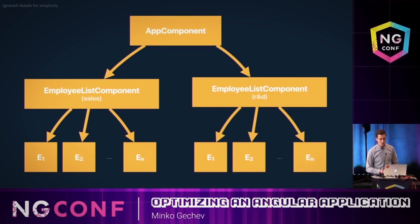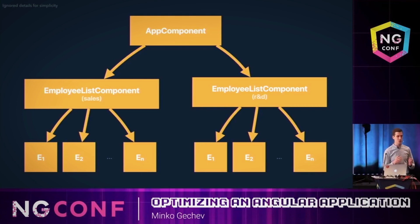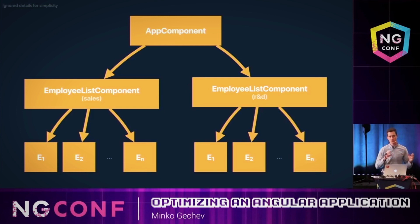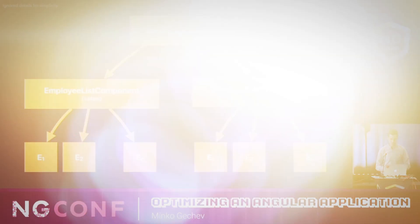What we would want to do is to invoke change detection for each individual employee in the list only when we get a new list. It makes sense, because otherwise we have already computed this data and we don't want to recompute it. But if we get a new list of employees, we would want to go through each individual employee and recompute this data again.